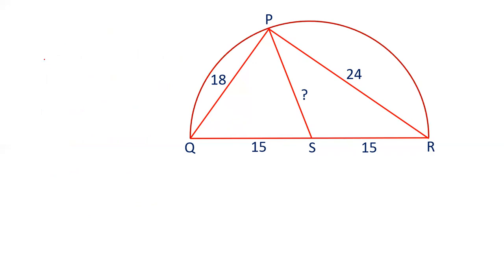Friends, this 18, 24 and 30. PQ is 18, PR is 24, QR is 30, 15 plus 15. The ratio of this 3 is 3, 4 and 5. And 3, 4, 5 is a Pythagoras triplet. So if this is a Pythagoras triplet, that means this angle is 90 degrees.